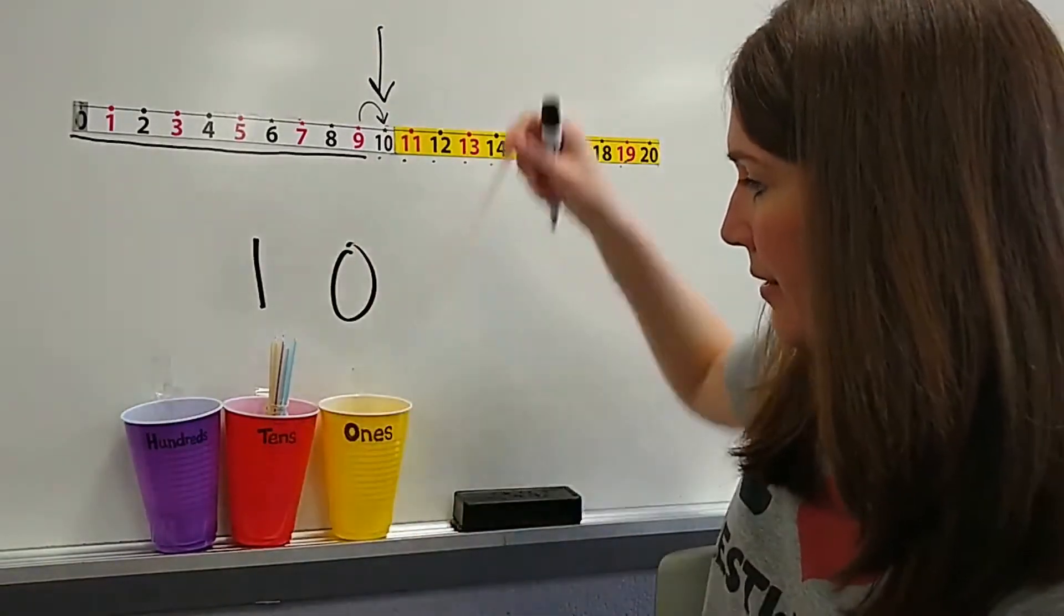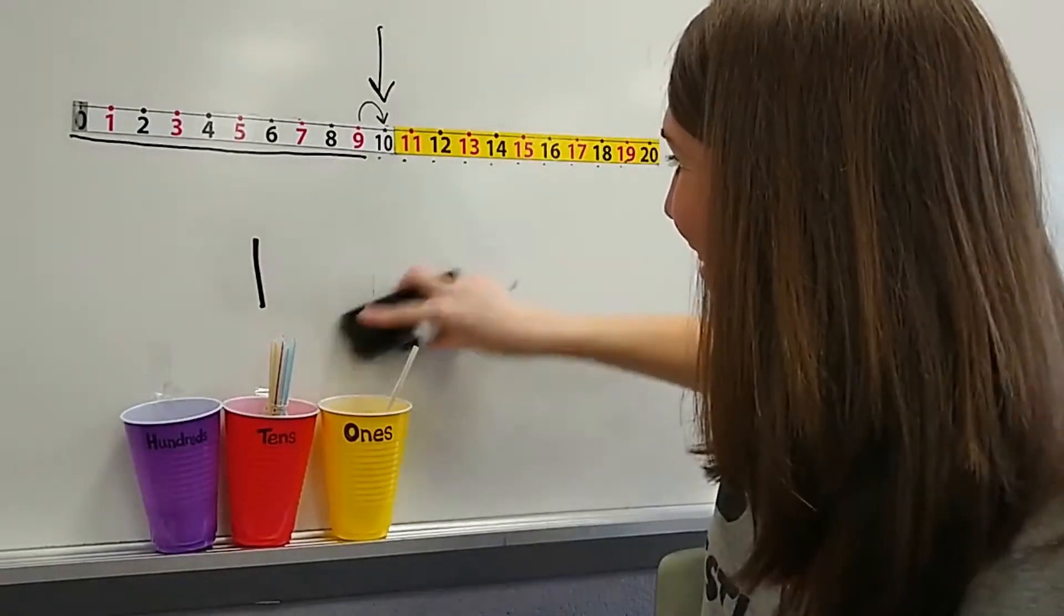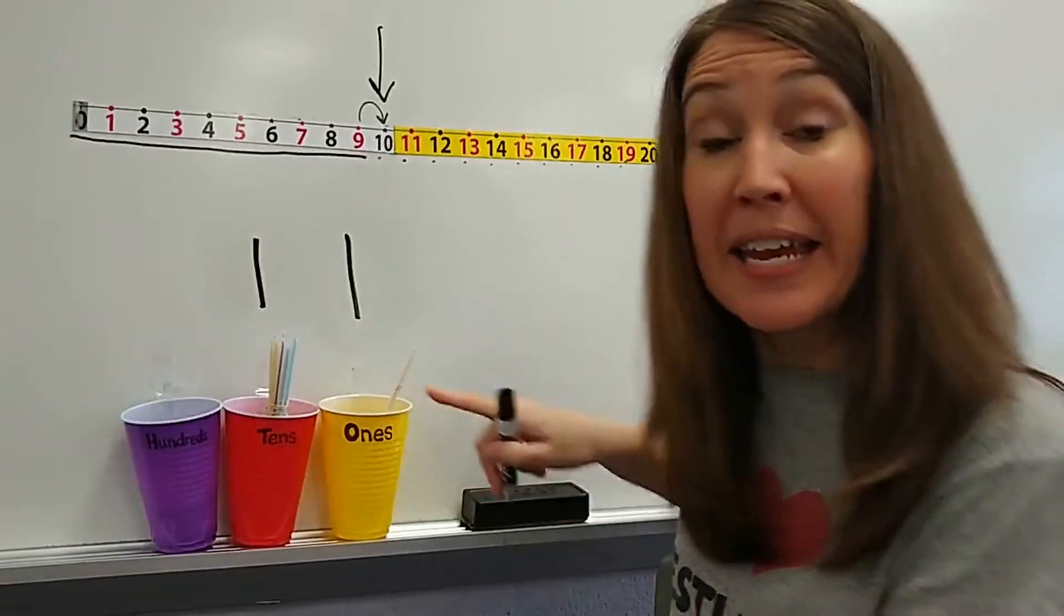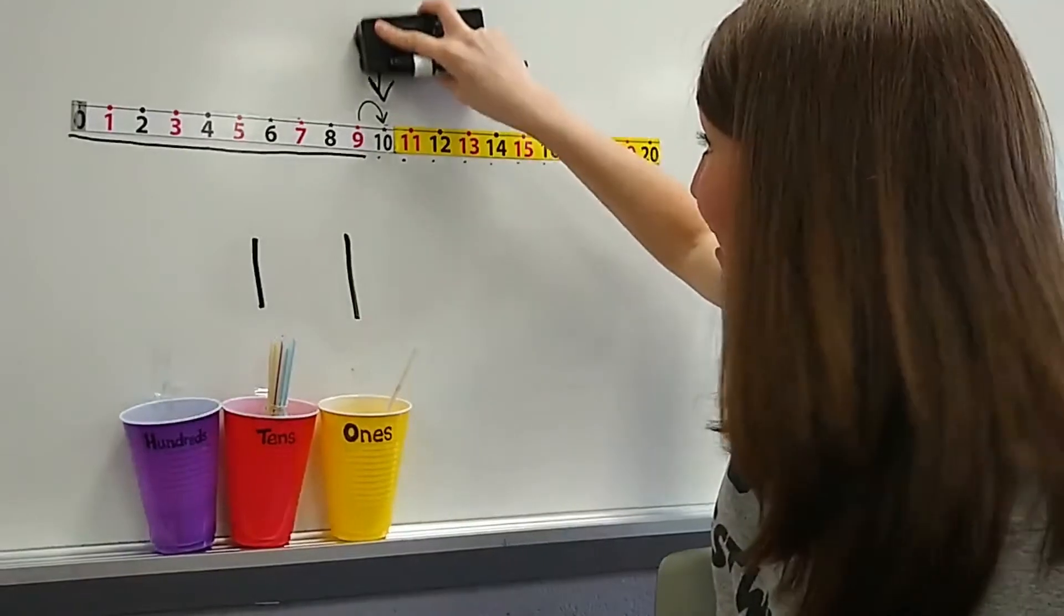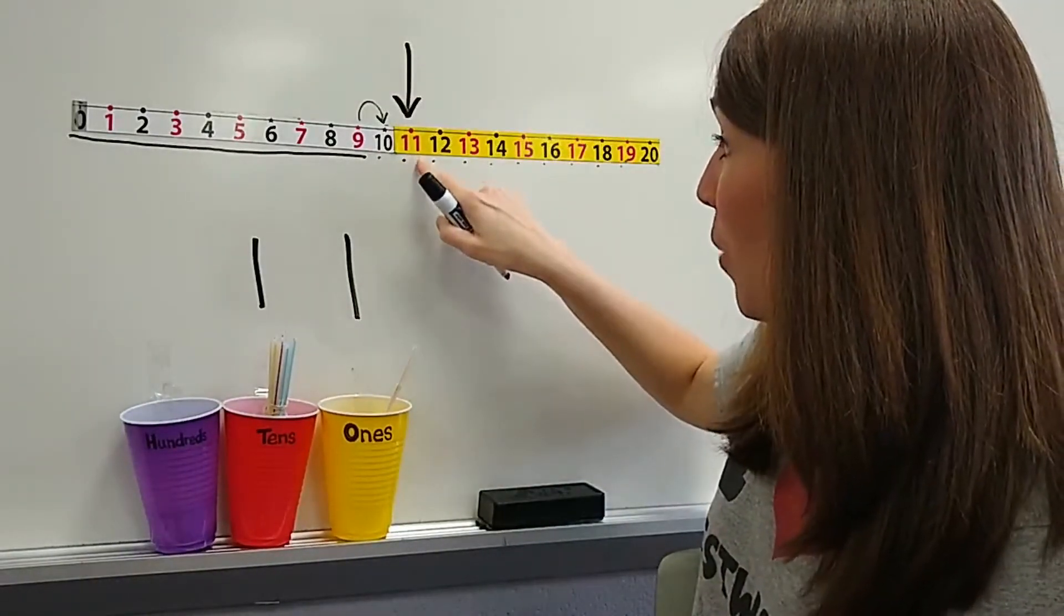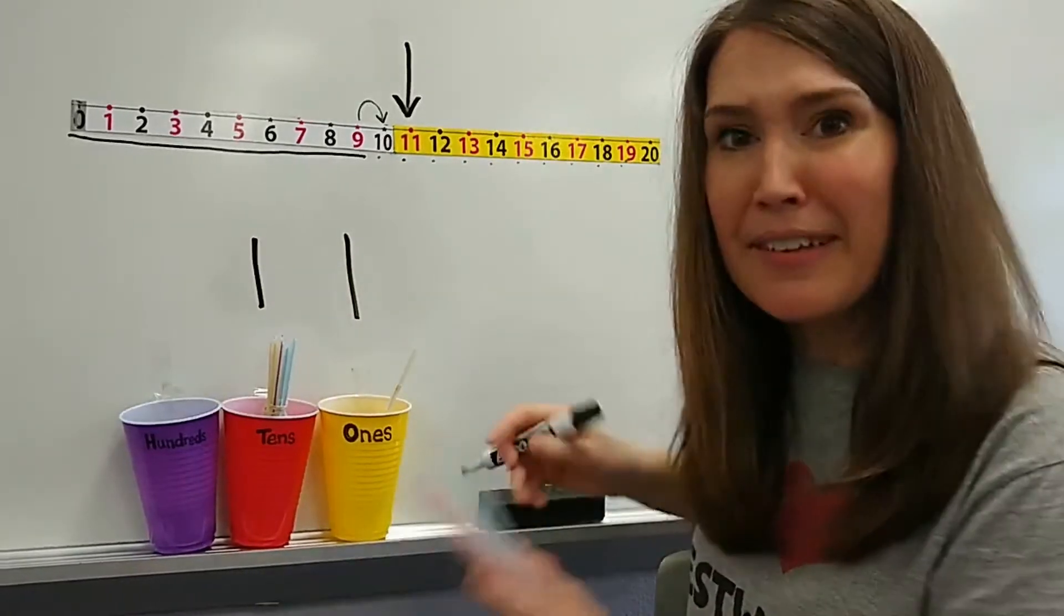If I have one group of 10 and I add one more straw, now I have one group of 10 and one little one. My number is 11. Do you see that? One one tells me one group of 10 and one more one. The number is 11.